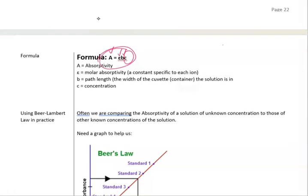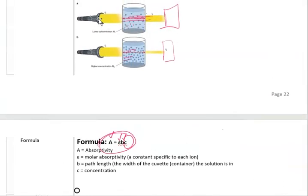The path length is the size of the container. So this is a pretty big path length. If we had a smaller path length, then more light would be able to shine through. Because if we have a smaller container, of course, there would just naturally be fewer particles in there, even if we had a very concentrated solution. So that path length makes a difference.